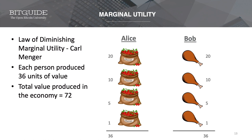Let's add some numbers. Say Alice values the first bag of cherries at 20 units — very important to her — the second bag at 10 units, the third at 5 units, and the fourth at only 1 unit. So Alice has produced 36 units of value in their little caveman economy. Bob also spent the whole day hunting. He values the first piece of meat at 20 units and the last one at 1 unit. Similarly, he has produced 36 units of value, and this economy overall has 72 units of value generated.